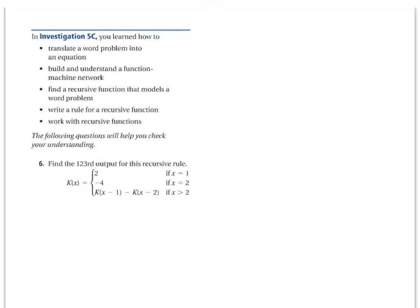It says find the 123rd output for this recursive rule. That sounds like a crazy problem, but as you know, if the problem gets crazy, there is some kind of secret here. Let's just take a look. Let's make a table because that's pretty helpful. We have input and output. If the input is 1, this says right here k of x is 2. k of x stands for output and x is the input. So output is 2 if input is 1. If x equals 2, k of x is negative 4.